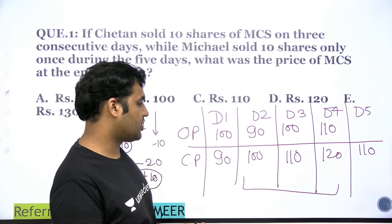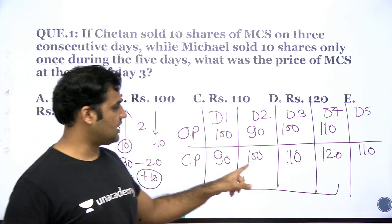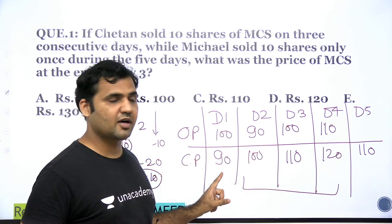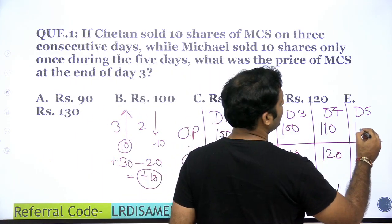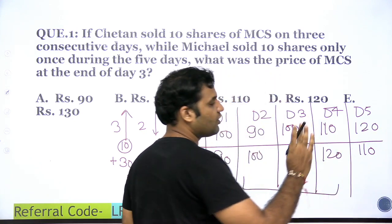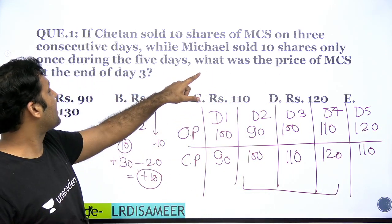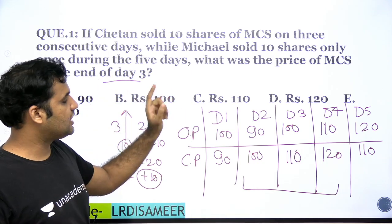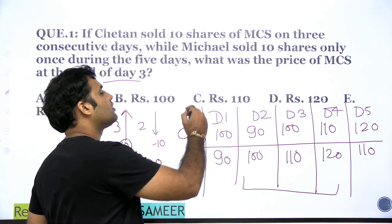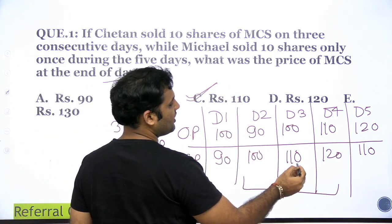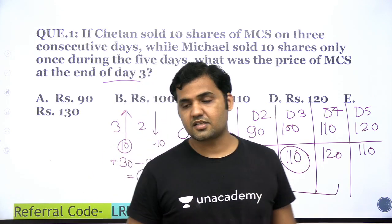Both question conditions are satisfied. We needed the price to go up 3 times and down 2 times — it went up on Days 2, 3, 4 and down on Days 1 and 5. The set is solved. The question asks: what was the price of MCS at the end of Day 3? Day 3 closing price is Rs.110. So the answer to this question is option C — 110 is the correct answer.